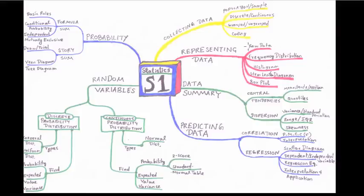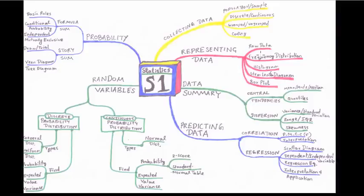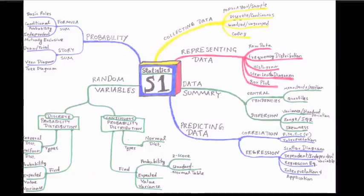After data is collected, the next step is representing it. The raw data — collected without any manipulation — is ordered from small to large and placed into a frequency distribution table. We can further represent it through diagrams: a histogram for continuous data, a stem-and-leaf diagram for discrete data, and a box plot which can represent both discrete and continuous data.